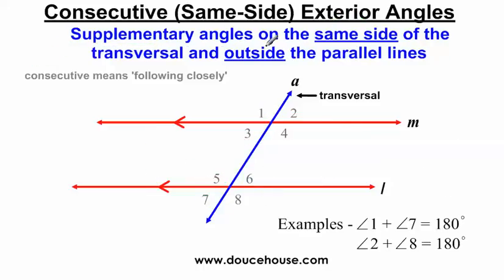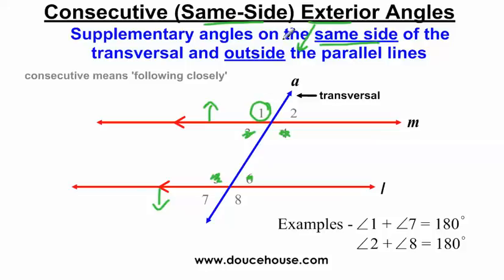The next angle relationship is consecutive exterior angles, otherwise known as same-side exterior angles. Very similar to the last example, except this is now exterior. The definition: supplementary angles on the same side of the transversal and outside the parallel lines. Exterior of a house is the outside, so we're looking at the outside of the parallel lines and ignoring all angles on the inside.